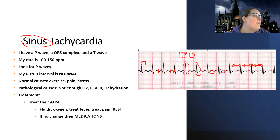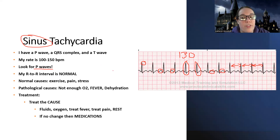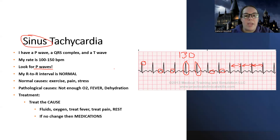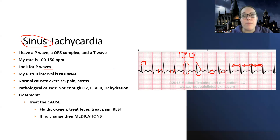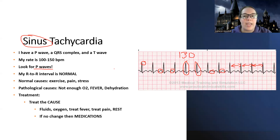One thing to note: if it's fast but I don't see P waves, I have a different rhythm which we'll talk about soon. So what could cause sinus tachycardia? Just like sinus bradycardia can have normal causes, so can tachycardia. For example, if I'm jumping on a treadmill, my heart rate goes up. If I'm in physical pain, my heart rate can go up. Pathological causes include lack of oxygen, fever where metabolism speeds up, or dehydration where the body tries to pump fluid faster.